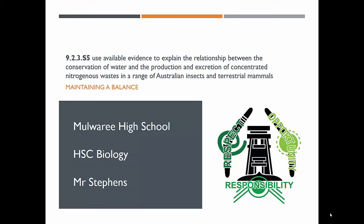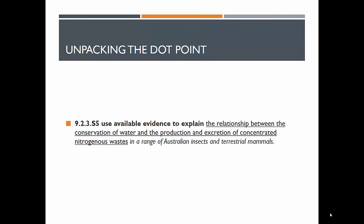Hello U12, welcome back to another flipped video. Today we are looking at another rather large dot point — 9.2.3.S5: use available evidence to explain the relationship between the conservation of water and the production and excretion of concentrated nitrogenous wastes in a range of Australian insects and terrestrial mammals. The verb is explain, and we are going to use available evidence — part of that evidence will be logic and reasoning, so it should be relatively straightforward.